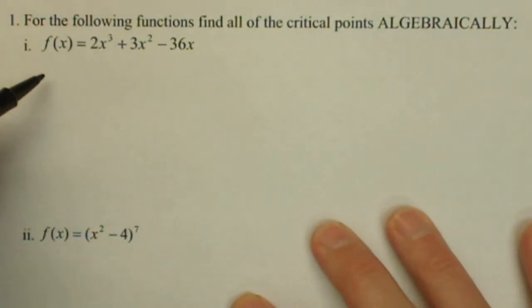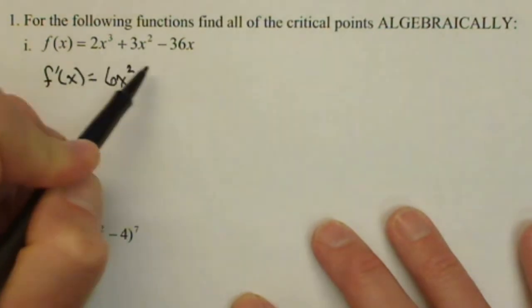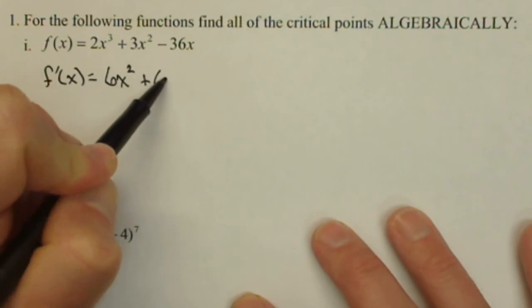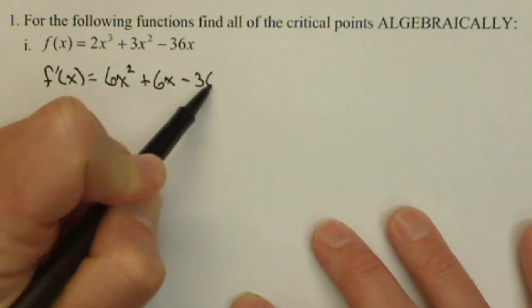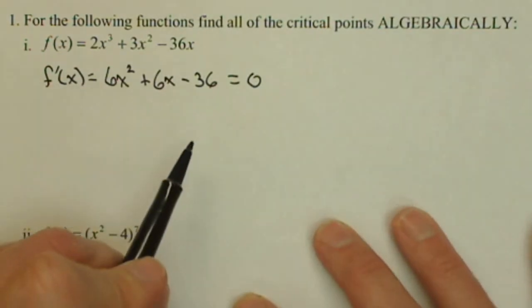The very first thing we do is find our first derivative. So f'(x) is going to be 6x² + 6x - 36. Next thing we do is set it equal to 0 and solve.